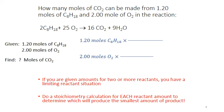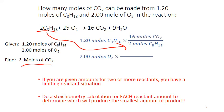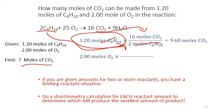Starting with the conversion for octane: we cancel out octane using its coefficient from the balanced equation in the denominator, and use the coefficient for carbon dioxide in the numerator. Moles of octane cancel out. 1.20 times 16 divided by 2 gives us 9.60 moles of carbon dioxide. In order to produce this much CO2, we would have to use up all of that octane.